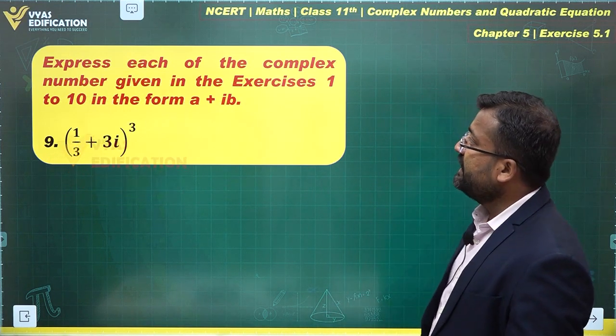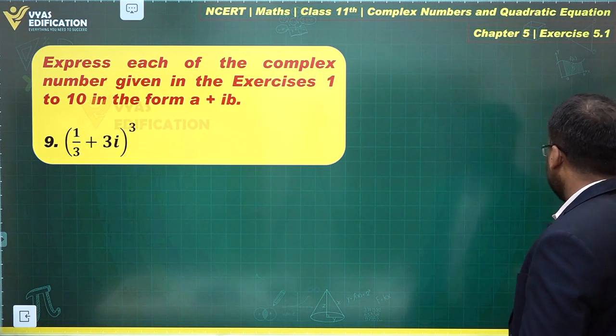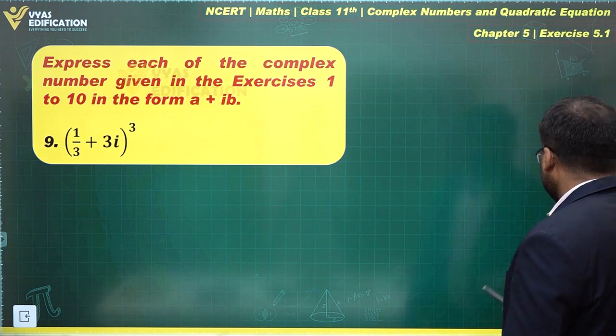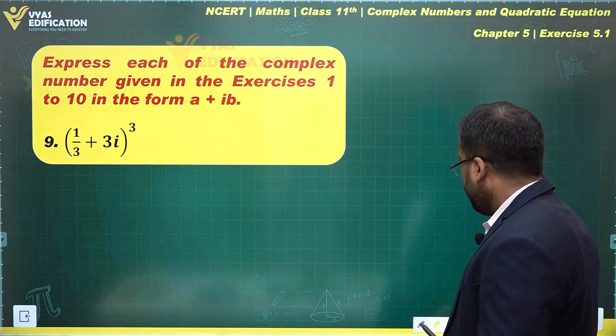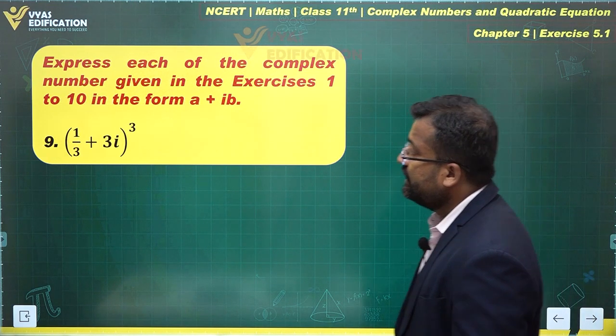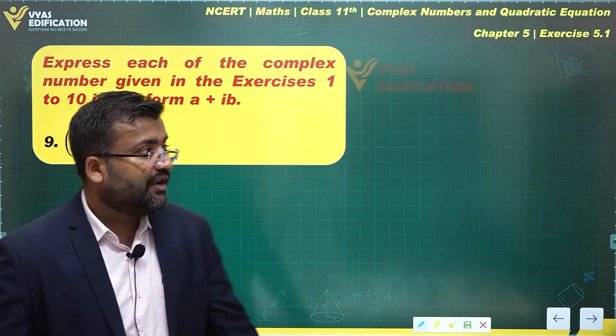Let's discuss part 9 next. What does part 9 say? Express in the form a plus ib, and we are given a complex number raised to power 3. Let's simplify this with the help of (a+b)³.